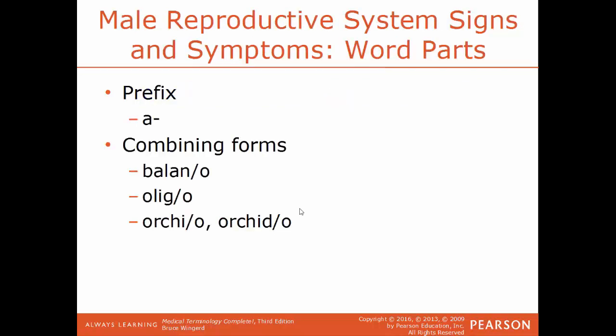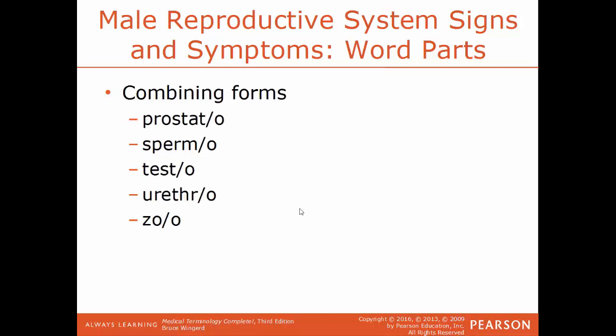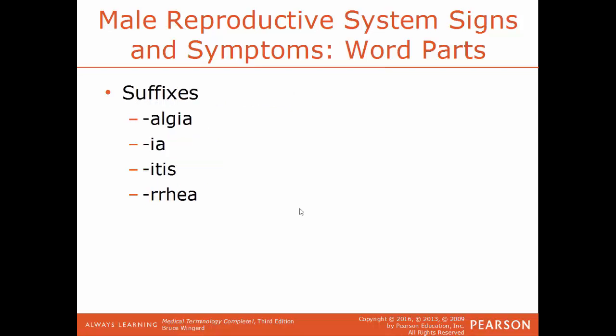Now we'll talk about the male reproductive system — some signs and symptoms and word parts. Prefix A means lacking or without. Common combining forms: balano is a reference to the glans penis; oligo means few; orchio or orchido is a reference to the testes; prostato is a reference to the prostate gland; spermo is a reference to the sperm cells; testo is a reference to the testes; urethro is a reference to the urethra; and zoo is a reference to animal life. Common suffixes: algea means painful; ea is a condition; itis means inflammation of; and urea is a flow or discharge.